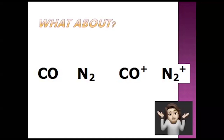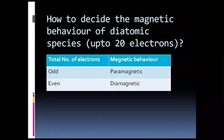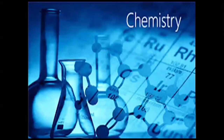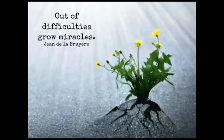Regarding magnetic behavior — how to decide the magnetic behavior of diatomic species — we have a small trick, valid if total electrons do not exceed 20. If an odd number of electrons is present, the species is paramagnetic. If an even number of electrons is present, it is diamagnetic. However, B2 and O2 are exceptions — both have an even number of electrons but are paramagnetic. Keep following our channel for more such videos — out of difficulties grow miracles. Thank you!